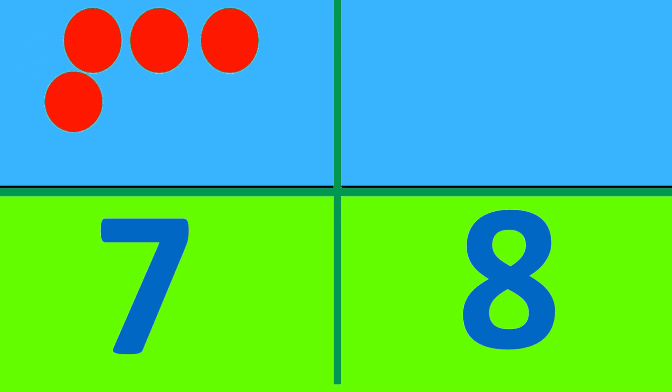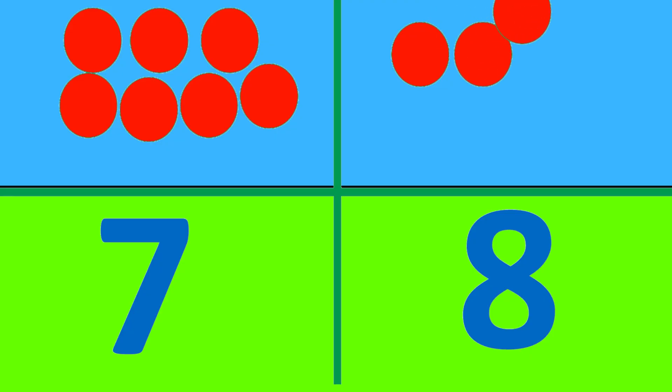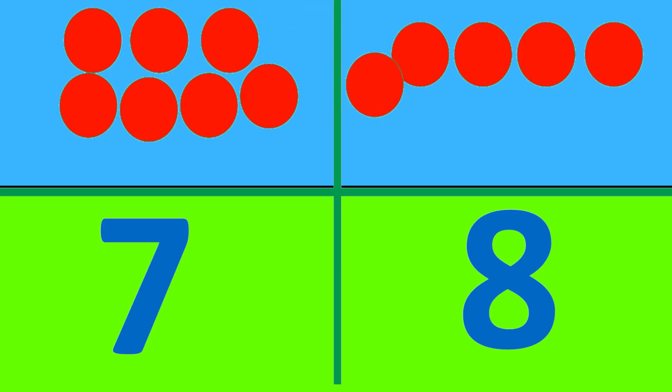Here's the number seven. We'll put seven balls. One, two, three, four, five, six, seven. Now, let's move on to number eight. We'll put eight balls. One, two, three, four, five, six, seven, eight.